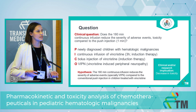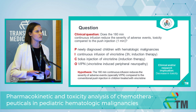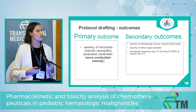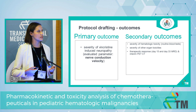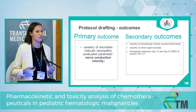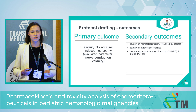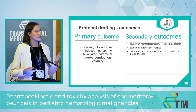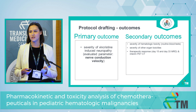Our implication is that with the alternative route of administration we can reduce toxicity in children treated with this drug. The primary outcome — severity of Vincristine-induced neuropathy — has a very heterogeneous clinical manifestation, so we need to objectify it by measuring nerve conduction velocity via electroneurography. Secondary outcomes include the severity of hematologic toxicity, other organ toxicities, and therapeutic response: day 15 and day 33 minimal residual disease for acute lymphoid leukemia, and interim PET-CT for Hodgkin lymphoma.